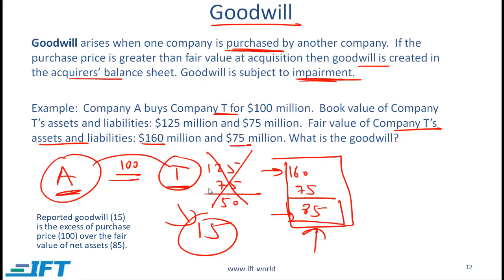As the term implies, this extra amount is paid because of the goodwill that company T has generated. Company T might have lots of satisfied customers and a very good brand, which is why the value of the overall company is more than simply the net assets it holds.